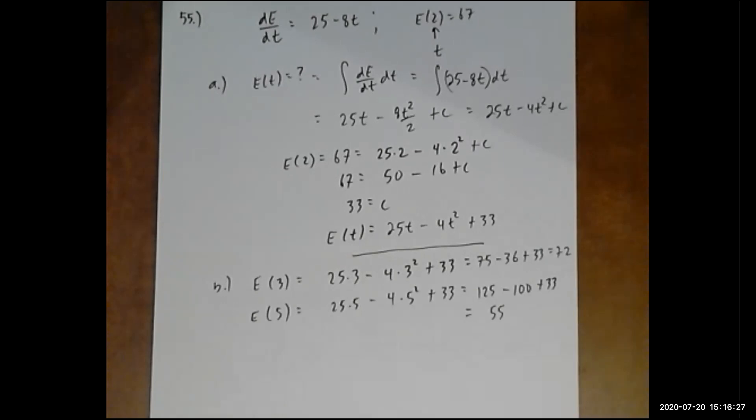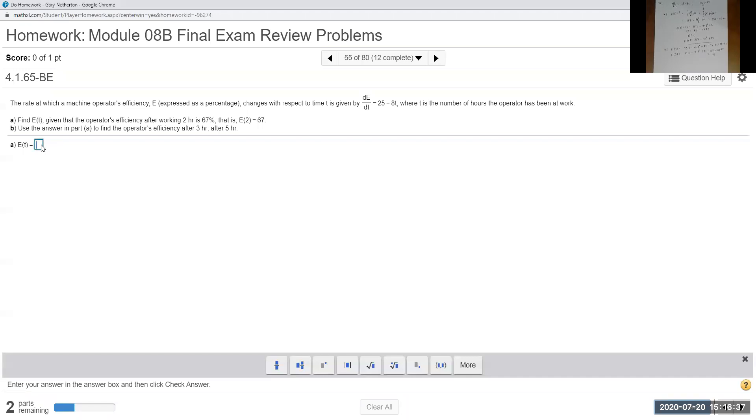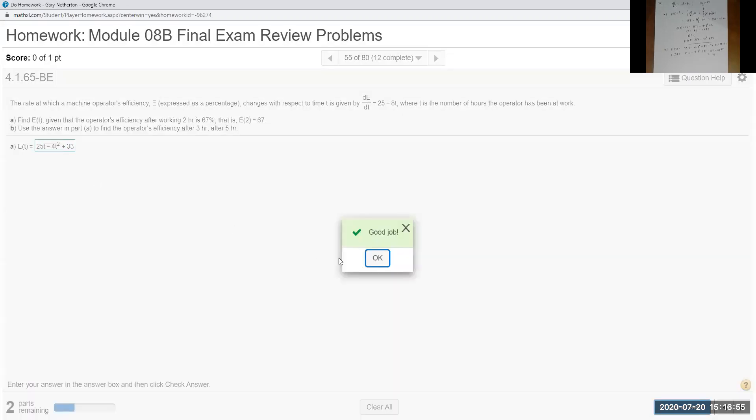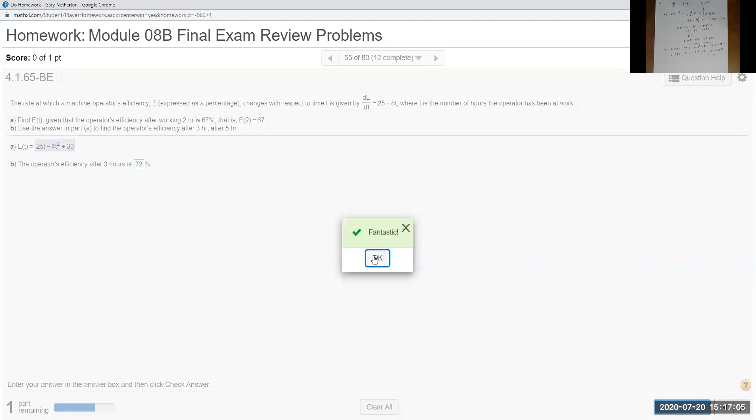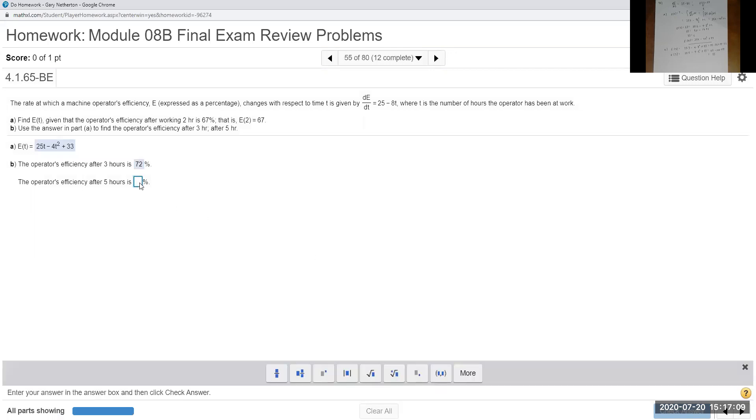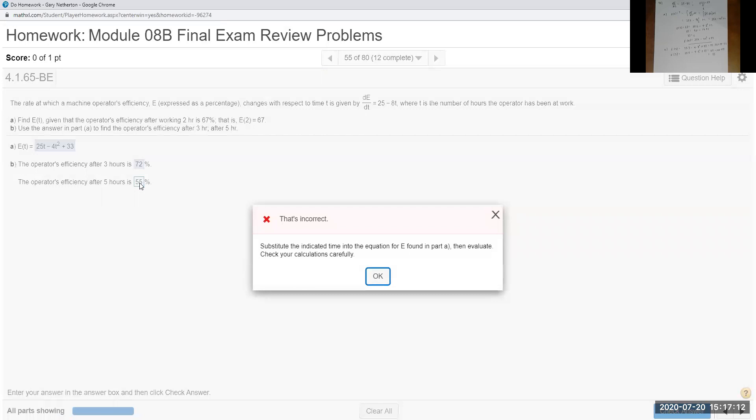All right, so here are all the answers. Let's plug them in and see if they're correct. This first one is just the equation: 25t minus 4t squared plus 33. Now when I put in 3, I end up with 72 percent. And when I put in 5, I've got 55. Whoops, missed a minute of math error. Let me look real quick. Oh, 58. Once again, you guys probably all saw that.